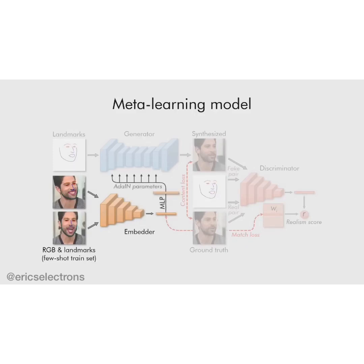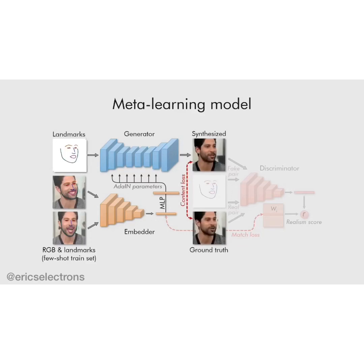The generator network maps landmarks into the synthesized video. The discriminator network assesses the realism, pose, and identity preservation of the generated frames. Better identity preservation is achieved by having a trainable embedding vector inside the discriminator for each training video. For more details, please refer to the paper.